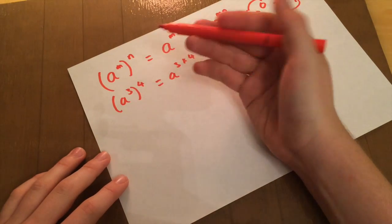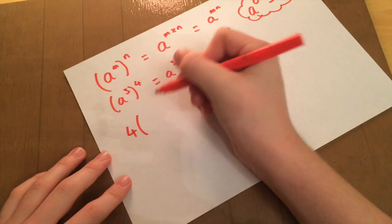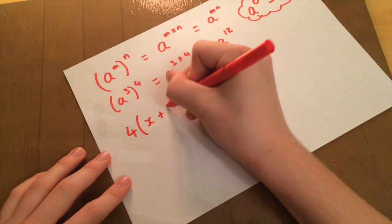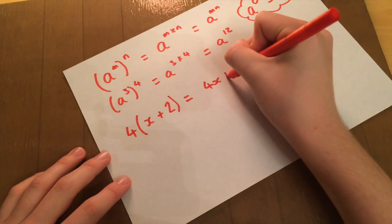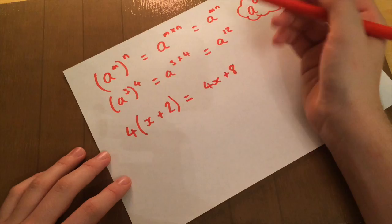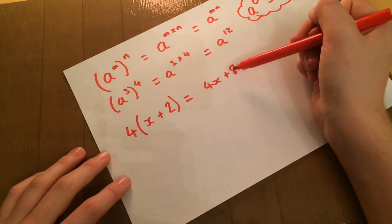If we had, say, 4 times the bracket x plus 2, that is the same as saying 4x plus 8, because you're timesing the 4 by everything inside the bracket, and then leaving it on the outside there.